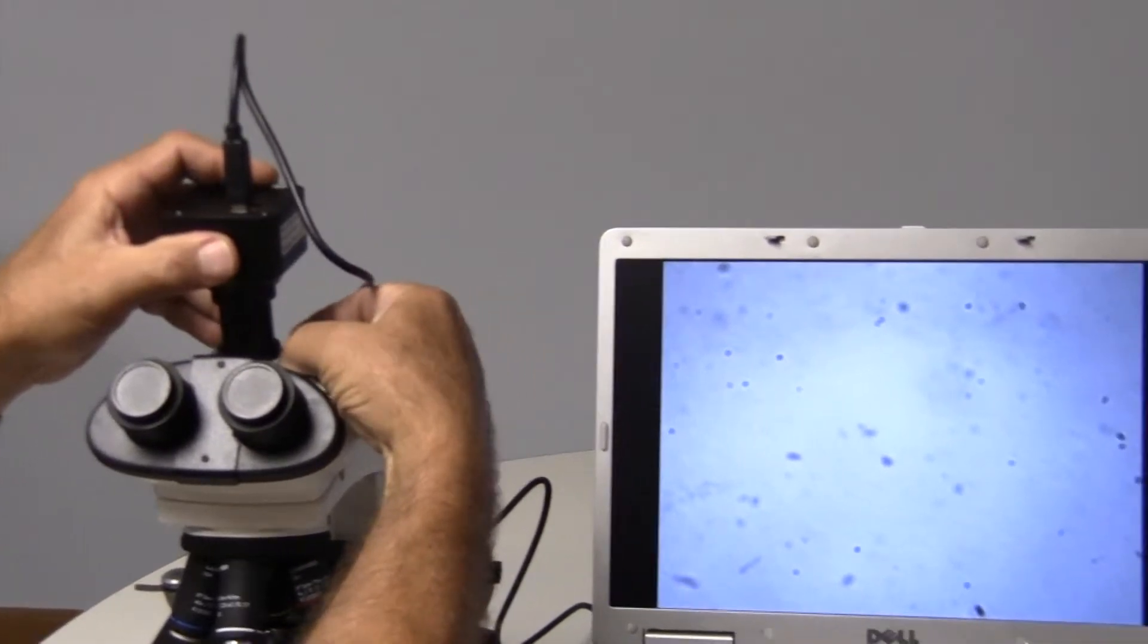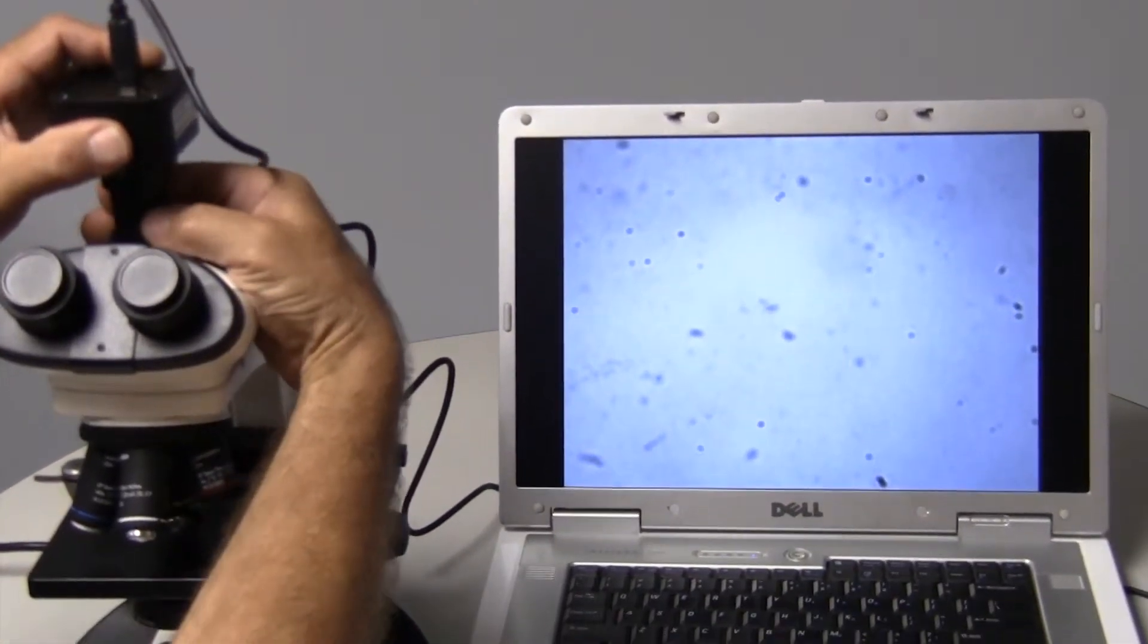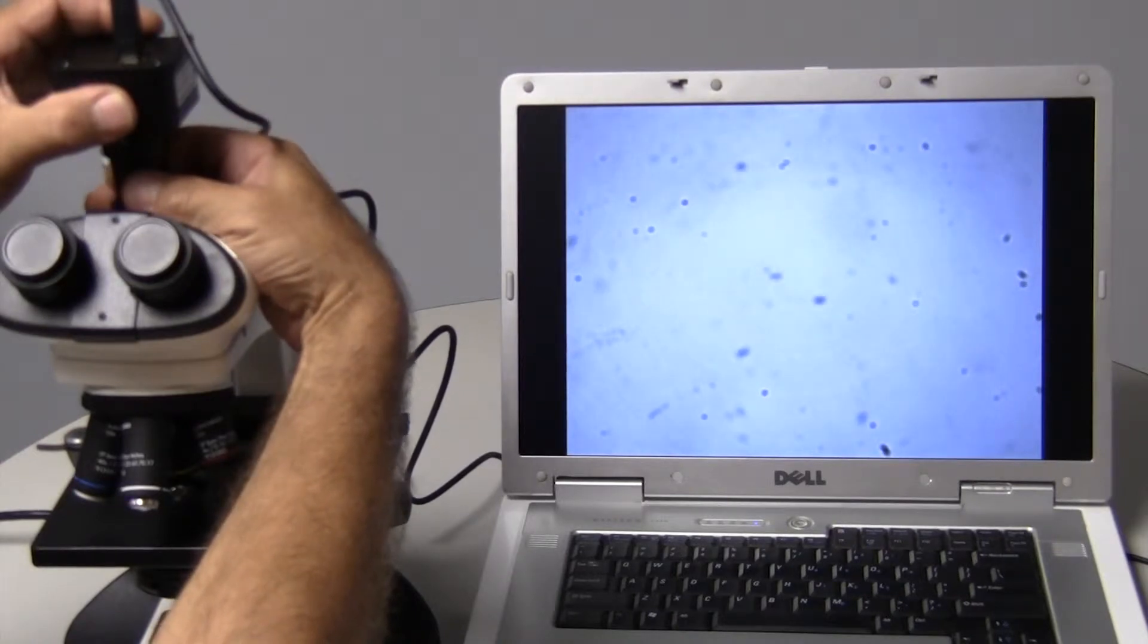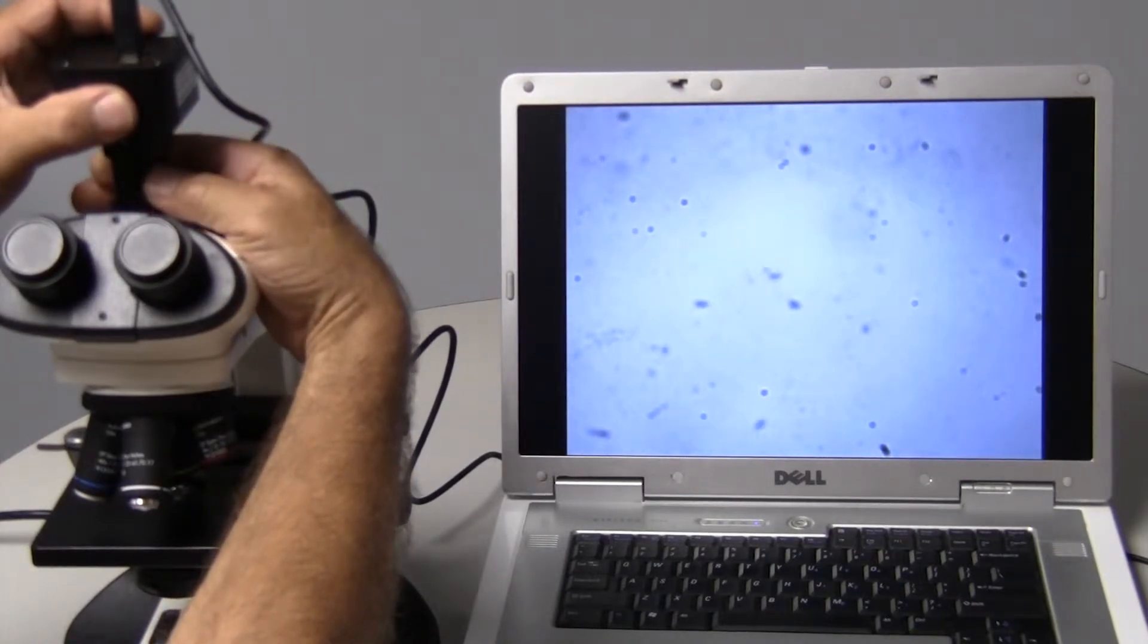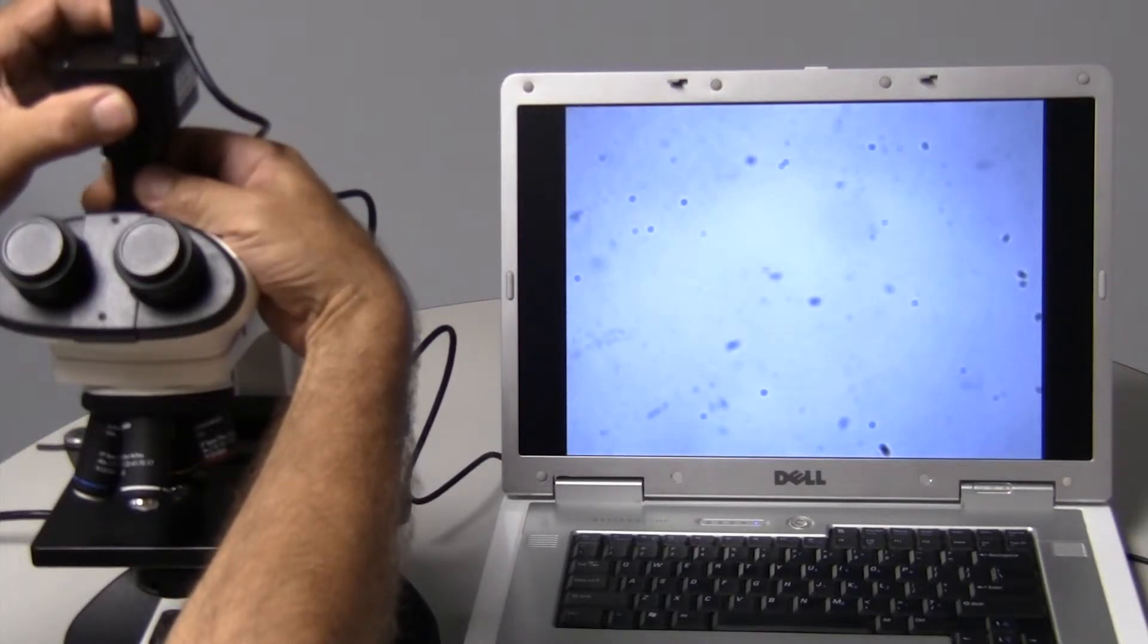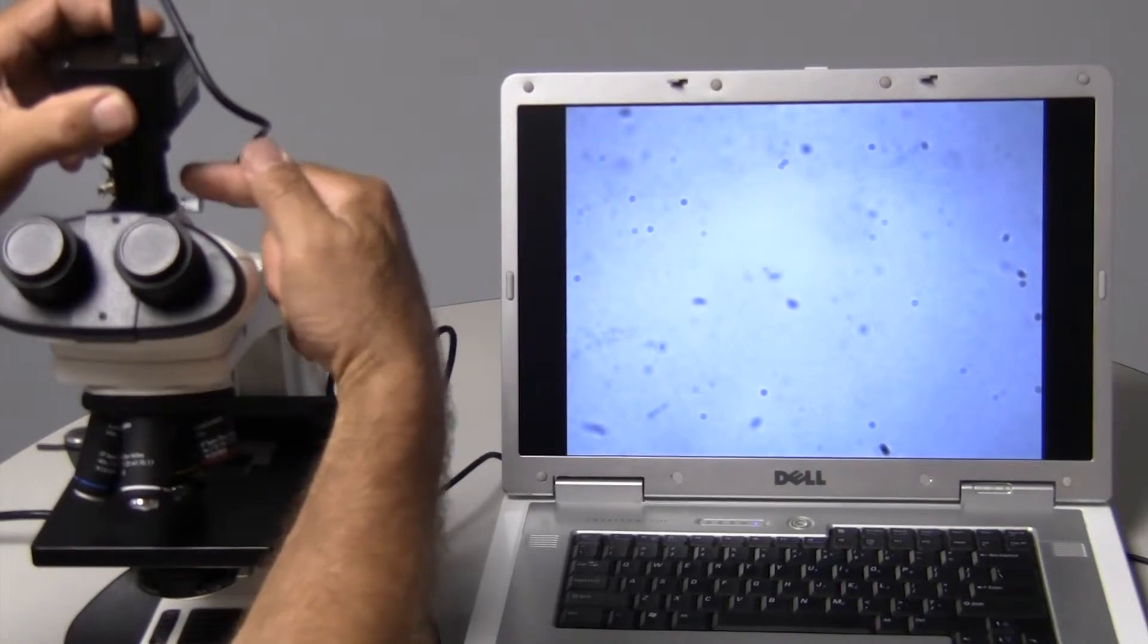So what I'm going to do now is, if you look at the dirt on the screen, I'm going to rotate just the intermediate lens. And when I do this, you'll notice that there is dirt that doesn't move in the field, and there's dirt that rotates. So the dirt that's rotating is the dirt that's contained within this lens.